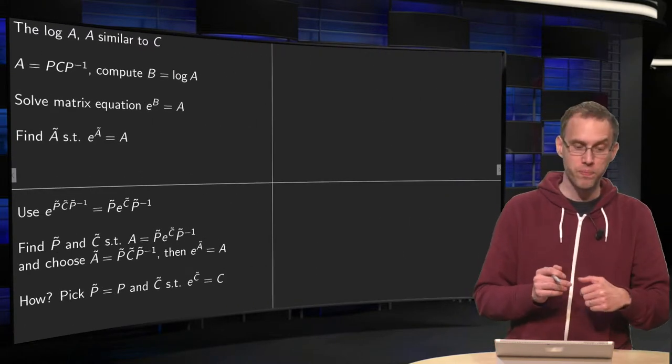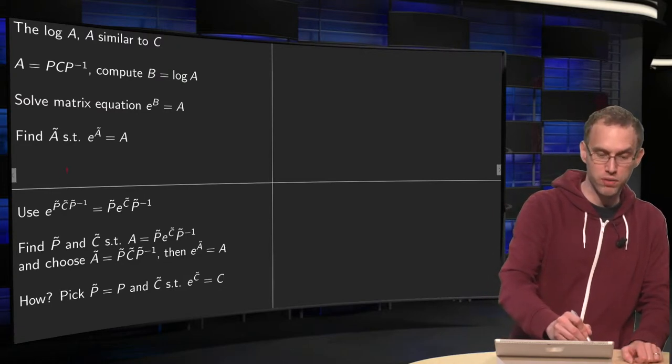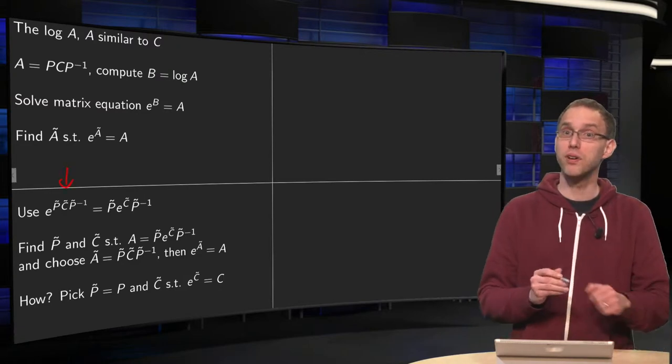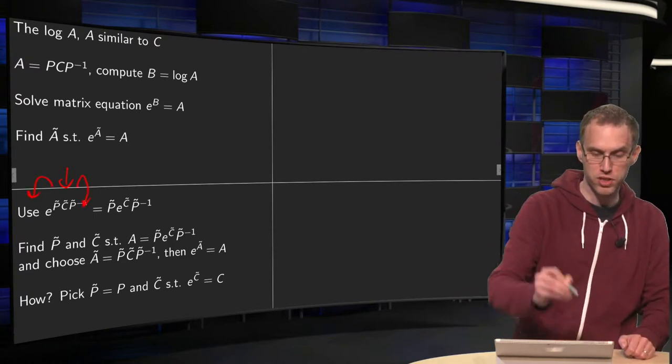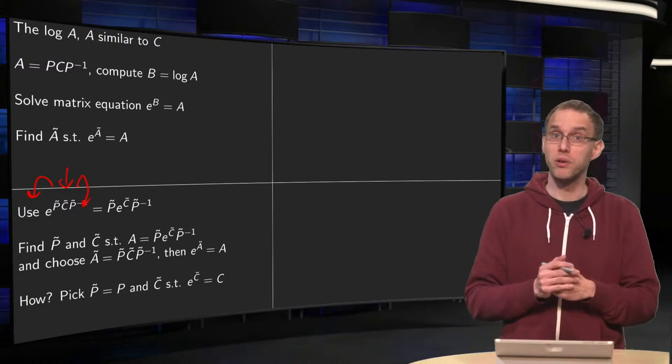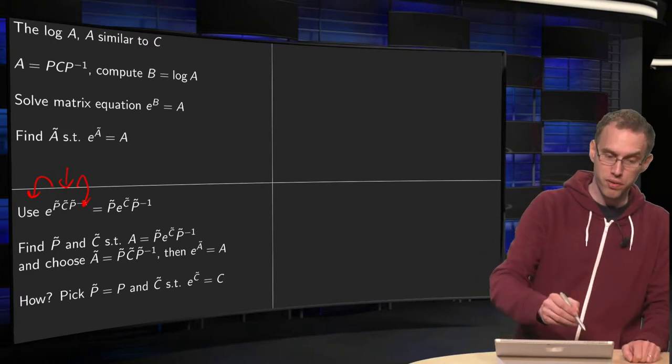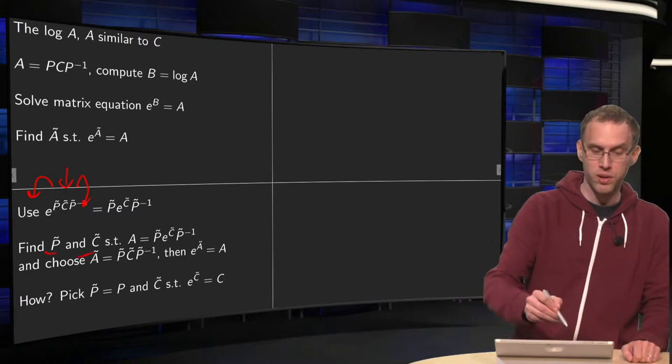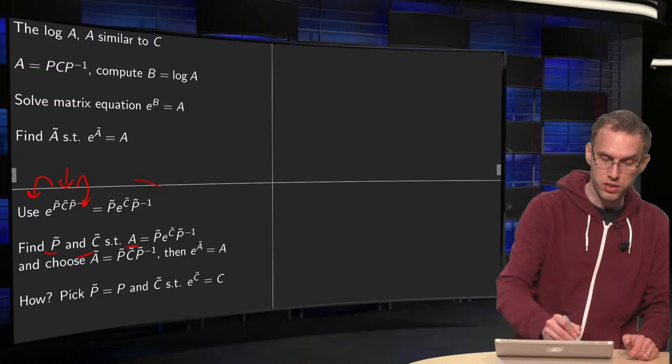So what do we do? We say well Ã equals some P̃C̃P̃ inverse. You know from the lemma that we can take the P's and the P inverses out. So this already looks quite a lot like A because A equals PCP inverse, so now we want to find P̃ and C̃ such that A is equal to e^(Ã) equals this matrix.